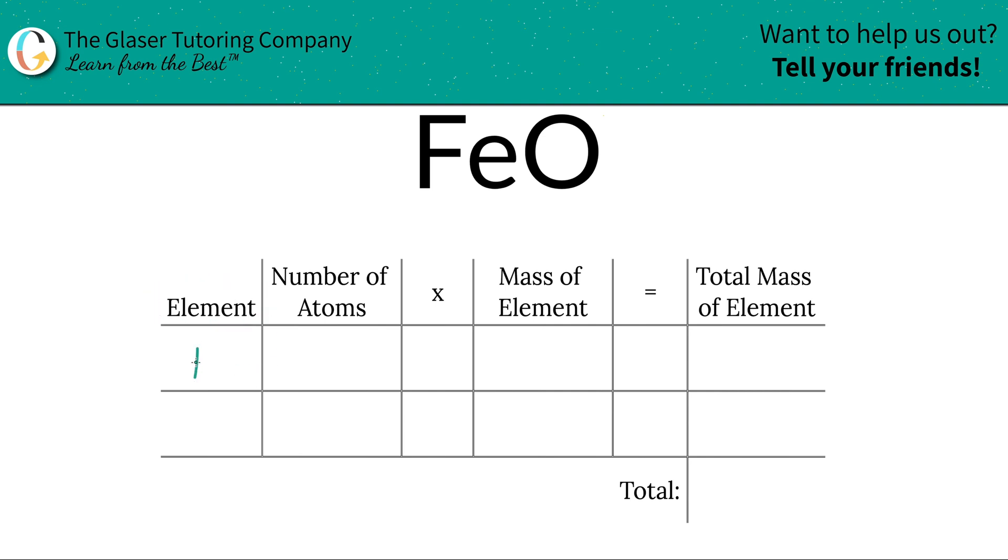So the first thing I'm going to do is write down the elements I see. Inside of iron two oxide, we have iron and oxygen. Then we write down the number of atoms. That's where the subscripts come into play. If there's no subscript, assume it's a one. So there's one iron and there's also one oxygen.